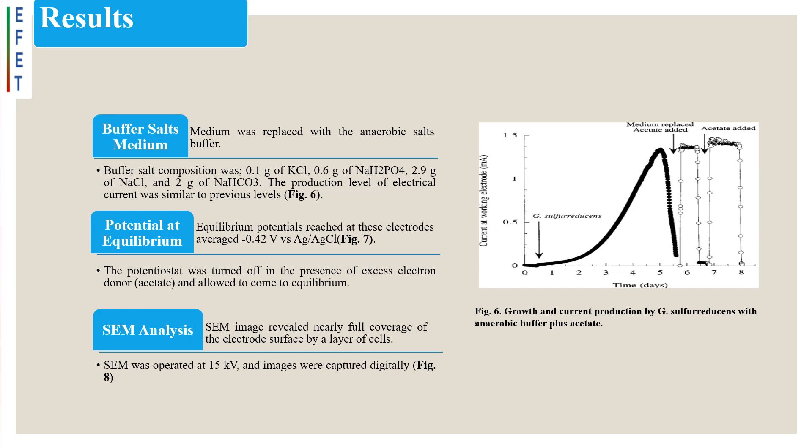When the potentiostat was turned off in the presence of excess acetate as an electron donor and allowed to come to equilibrium, the potential of the electrode rapidly decreased. Equilibrium potentials reached at these electrodes averaged minus 0.42 volts versus silver by silver chloride. Scanning electron microscopy image revealed nearly full coverage of the electrode surface by a layer of cells.